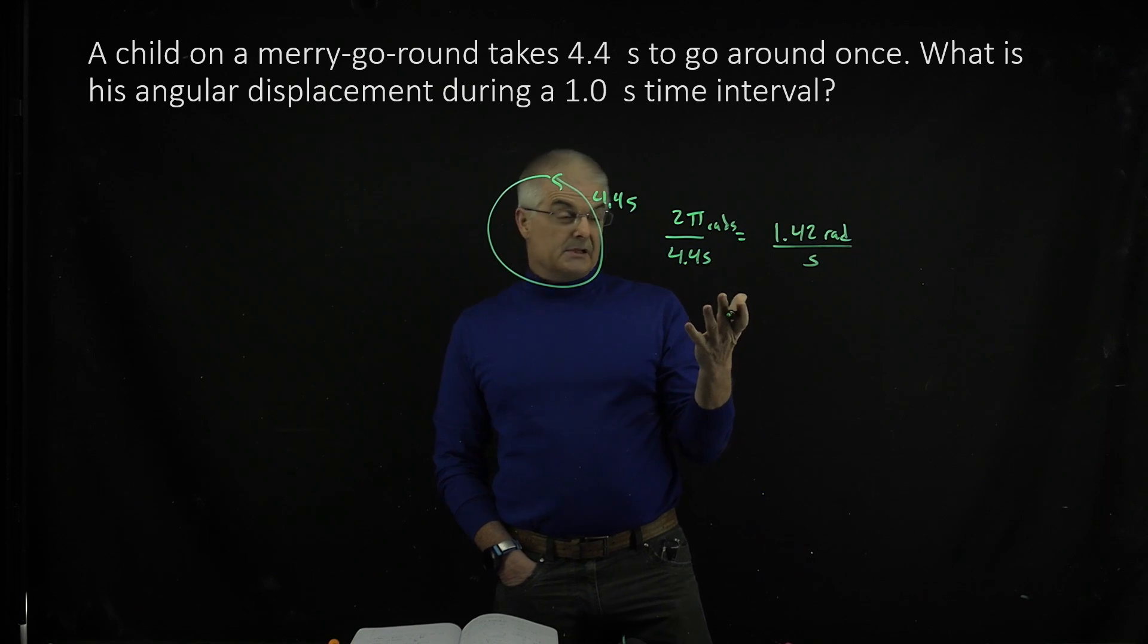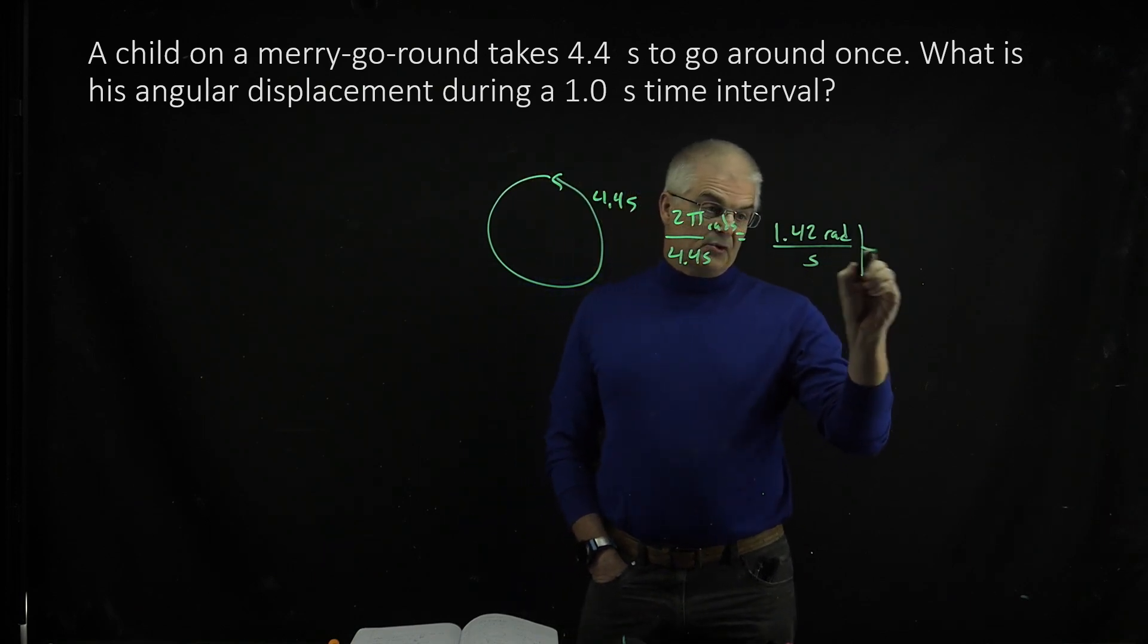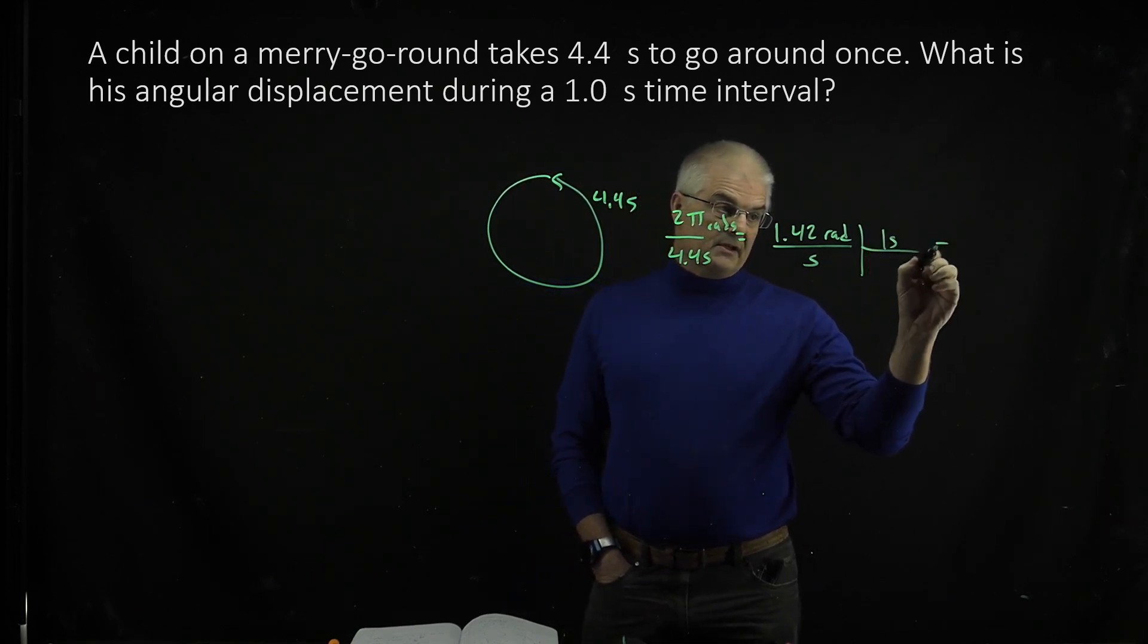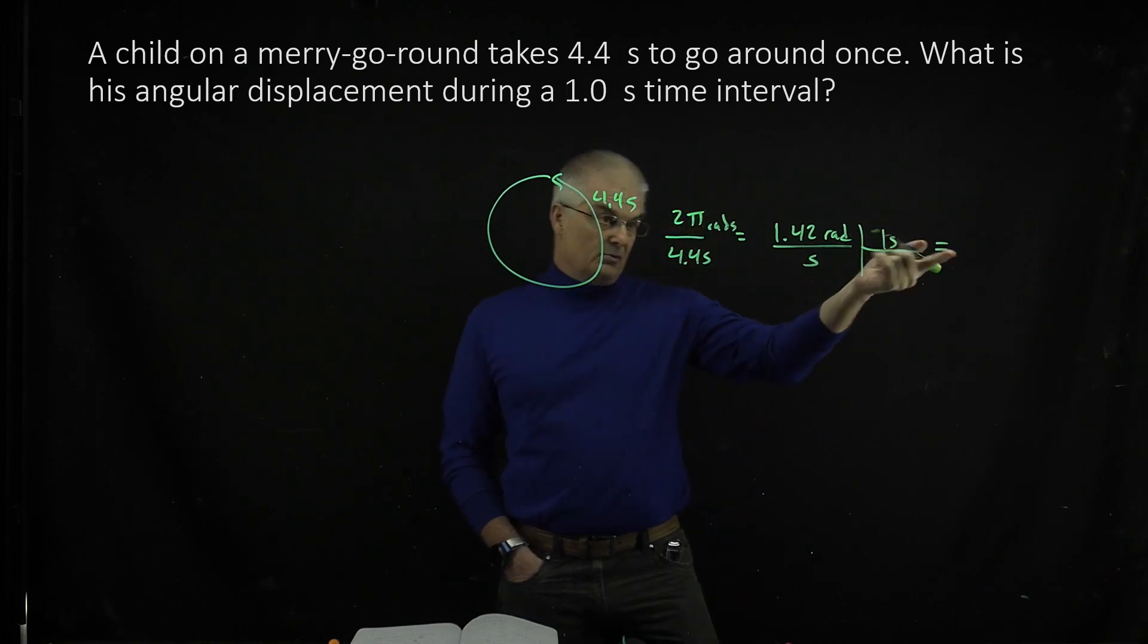So it says, what is his angular displacement in one second? You then multiply by one second, and you get 1.42 rads.